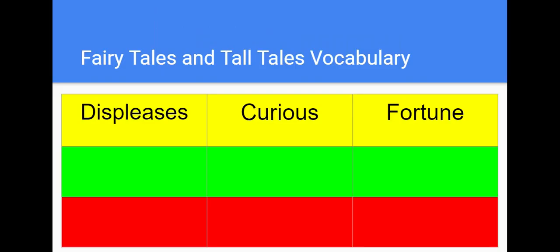Before we talk about yesterday's story, let's talk about yesterday's word work words we have been going through. As I read the word, you repeat it after me. Displeases. Curious. Fortune. Let's go through them one more time. Displeases. Curious. Fortune. One quick question about our words: what word has a prefix at the beginning?